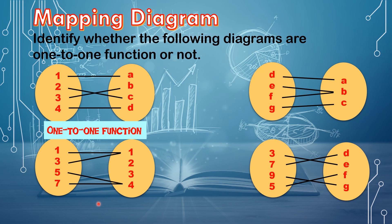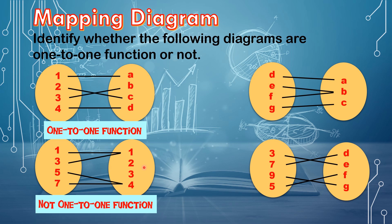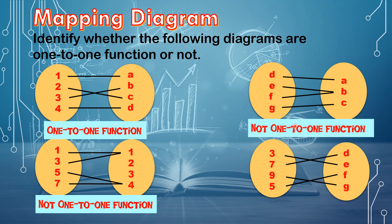In the second diagram, there is a repetition of pairing. The range value 1 is paired to both domain value 1 and domain value 3. Therefore, this diagram is not a one-to-one function because the value 1 is repeated. In the third diagram, the range value B is repeatedly paired to domain values E and F. Therefore, this diagram is not a one-to-one function.